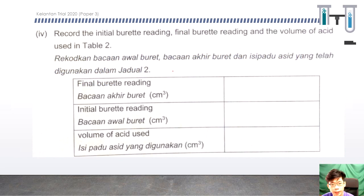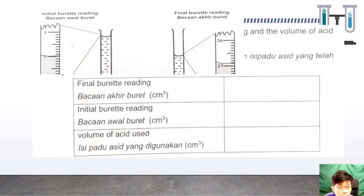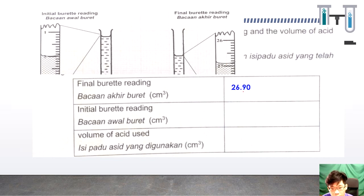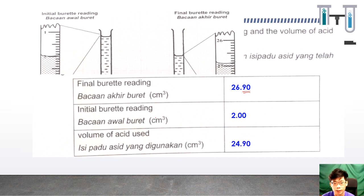Record the initial burette reading, final burette reading, and the volume of nitric acid used in Table 2. The final burette reading is 26.90 cm³. Remember, there are two decimal places for burette readings. The initial burette reading is 2.00 cm³. The volume of acid used equals final minus initial burette reading, giving 24.90 cm³. This volume will be used as VA in the calculation.